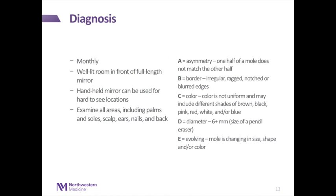So how do we detect melanoma? The main way is by the skin self-exam. We recommend patients get monthly self-exams in a well-lit room in front of a full-length mirror; a handheld mirror can be used for hard-to-see locations. It's important to examine all areas, including the palms and soles, the scalp, the ears, the nails, and back. And this is a visual of how that is done.